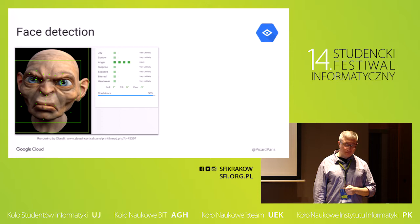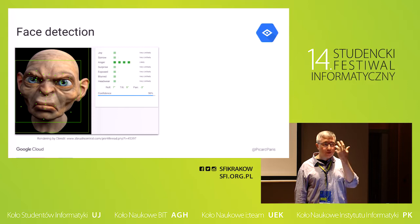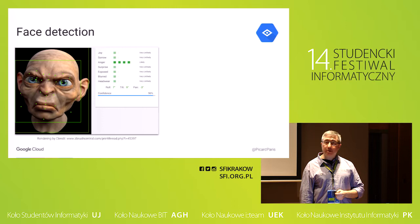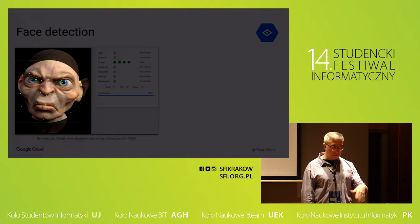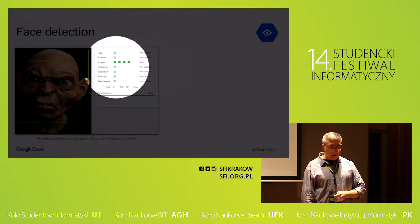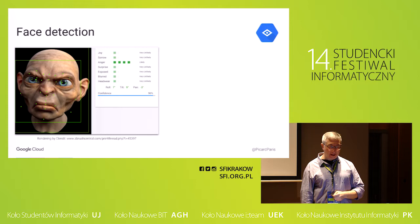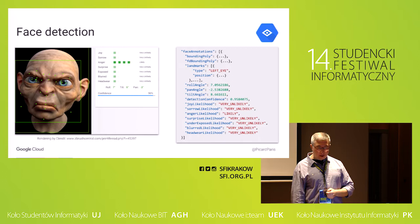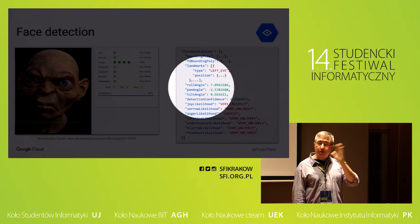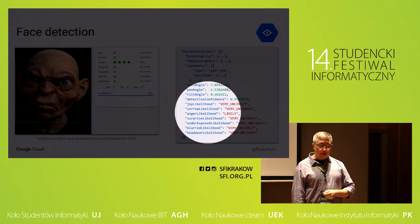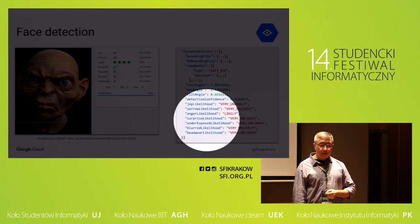The Vision API is also able to recognize faces within pictures — the position of your eyes, nose, mouth, and everything, and also the sentiments. I used a rendering of Gollum and it tells me Gollum is angry. In the JSON data you get, you can analyze everything: the position of the left eye in three dimensions, how the face is positioned, turned or skewed, and the likelihood that the face is joyful, angry, or surprised. It also tells you whether the picture is blurred or underexposed, and whether the face is wearing something on its head.